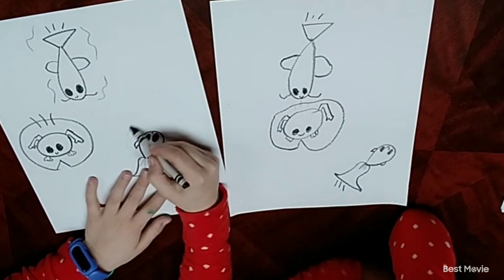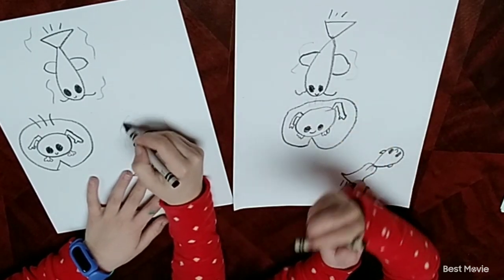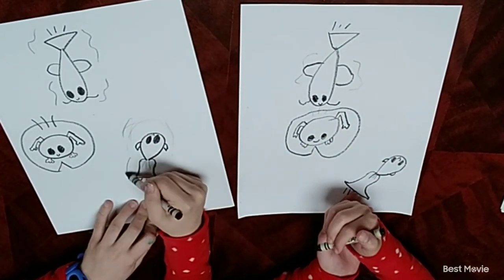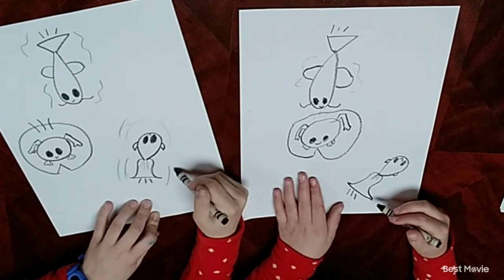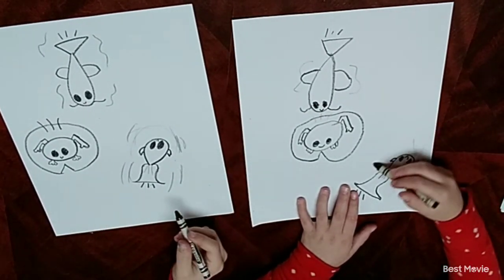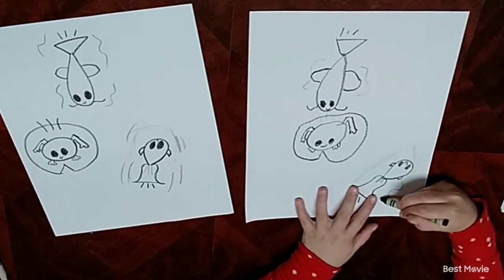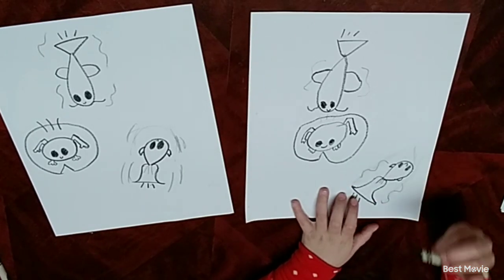So then around this one, I kind of drew like a barrier. Then some lines to make it look like it's swimming. Because fish don't just sit there in the water. They swim.